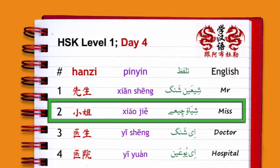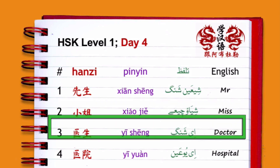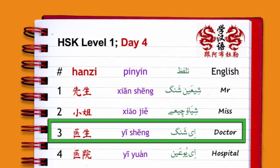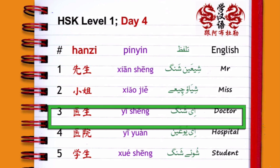Number 3 is 医生 (yīshēng), which means 'doctor.' Just like the example of Dr. Ali — in Chinese you say 'Ali yīshēng': first the name, then the designation.